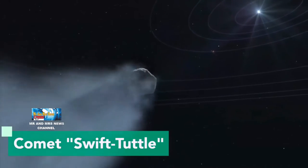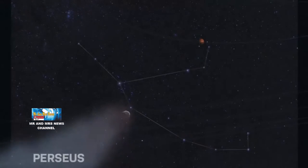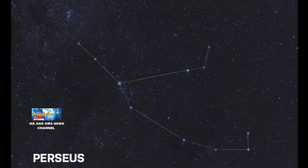Fenomena hujan meteor Perseid dapat disaksikan dari arah utara barat laut hingga utara, mulai tengah malam hingga fajar bahari atau 20 menit sebelum matahari terbit.